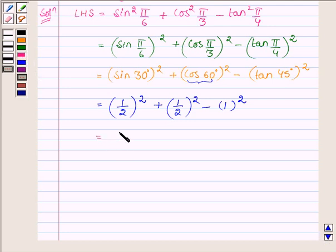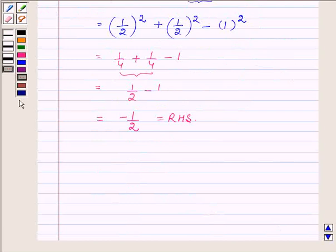So it can further be written as 1 upon 4 plus 1 upon 4 minus 1. Now in adding these two we get 1 upon 2 minus 1 which is further equal to minus half